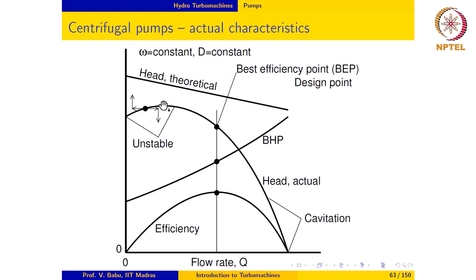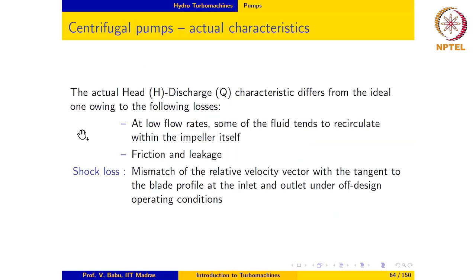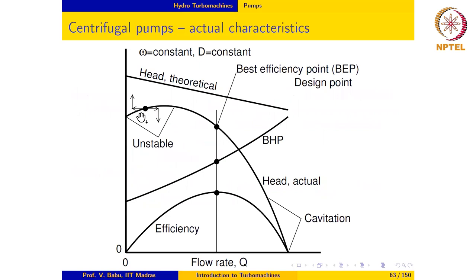Why does the actual characteristic depart so much from the theoretical characteristic? The reasons are as follows. At low flow rates, some of the fluid that enters the impeller tends to recycle within the impeller itself. In fact, the flow rate is so low that the fluid pretty much stagnates in the impeller and doesn't really go through, which is one reason we see reduced head at low flow rates.